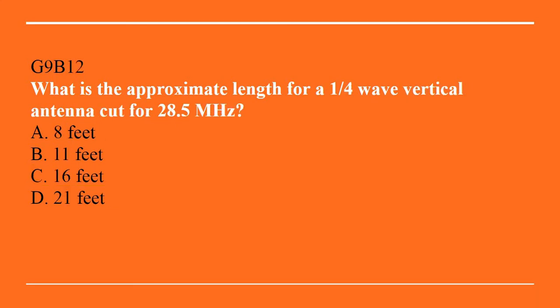G9B12: What is the approximate length of a quarter-wave vertical antenna cut for 28.5 MHz? A. 8 feet. B. 11 feet. C. 16 feet. Or D. 21 feet. The correct answer is A, 8 feet.